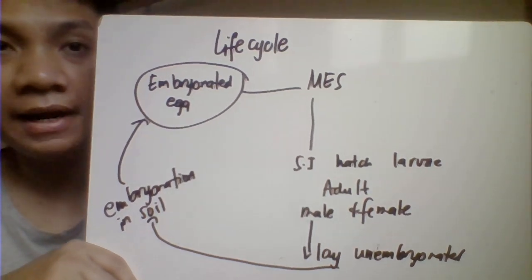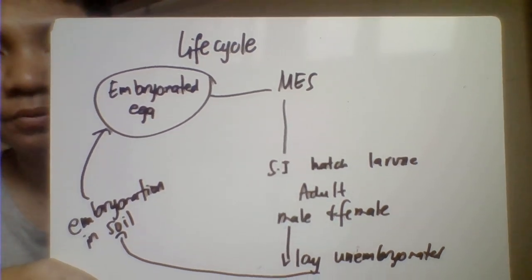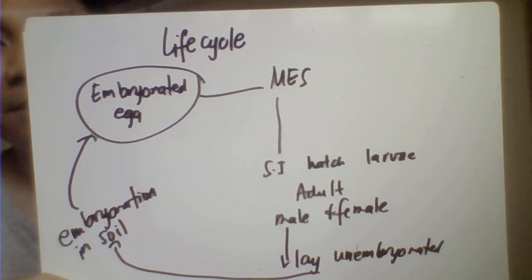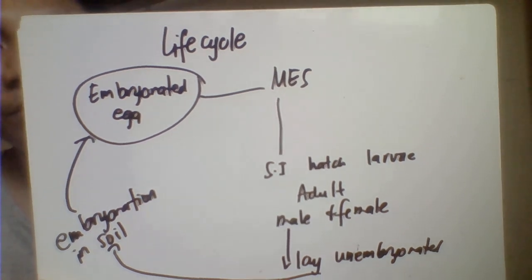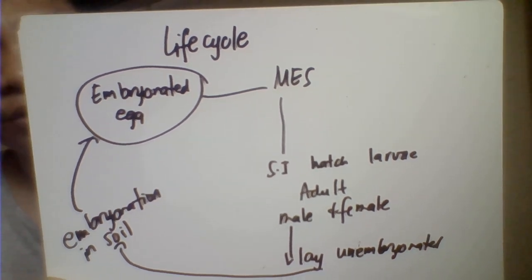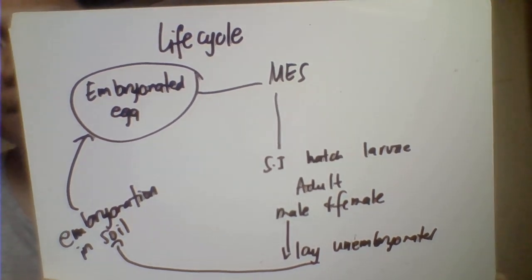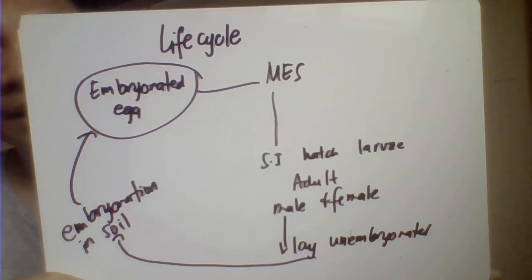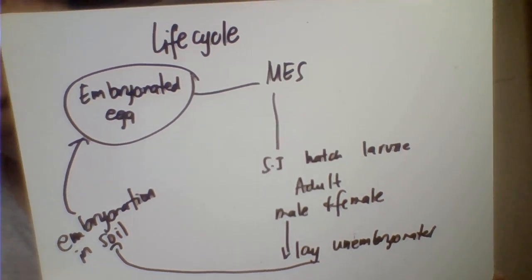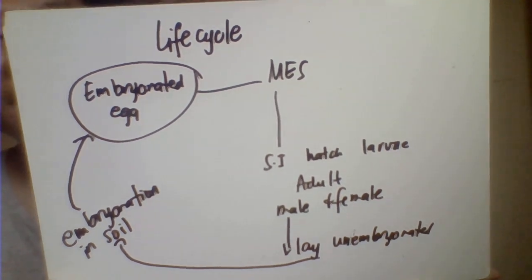For the Toxocara life cycle, the dog and cat serve as definitive hosts, while humans serve only as accidental hosts. The life cycle begins upon ingestion of contaminated food or water containing embryonated ova, the infective stage. The ova hatch in the small intestine, mature to become adult worms, then male and female adults copulate. The female lays unembryonated eggs shed in the feces of the infected host, which go to soil where they undergo embryonation, becoming infective.